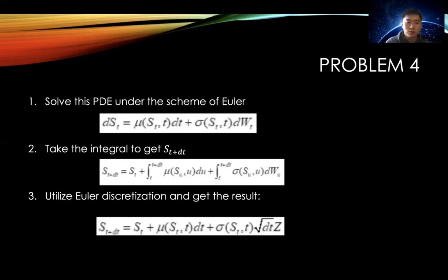First step, we're going to solve this SDE under the scheme of Euler. dSt equals μdt plus σdWt. Then we take the integral for both sides to get St plus dt. For the first integral, if we utilize Euler discretization, we'll get μStdt.